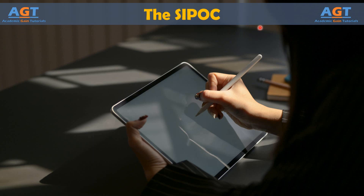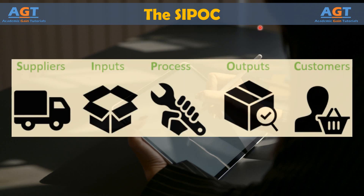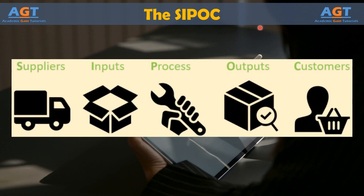A SIPOC diagram is often an important part of the define stage of a Six Sigma project. But you can use the SIPOC diagram anytime you want to learn more about a process or understand how a process in a business environment is linked to other processes.